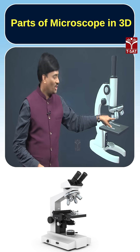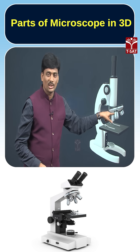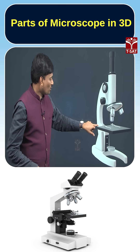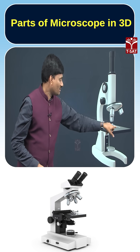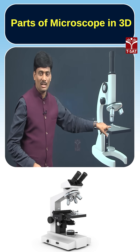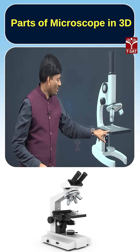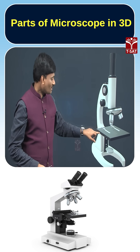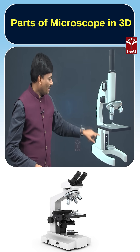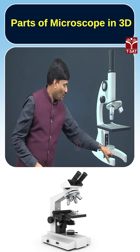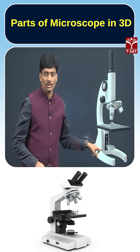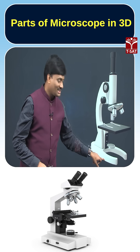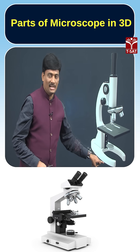Below the revolving nosepiece, you are able to observe the objective lens. Next, here you are able to observe the stage — on this stage we are going to place the slides. Next, here is the base, which is U-shaped, and this is called the base.